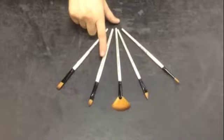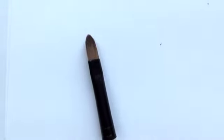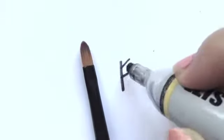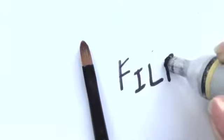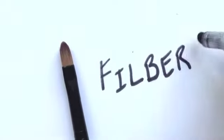Filbert. The Filbert brush is rounded on top, but shaped like a flat. This is a great brush for filling in large areas on your canvas.